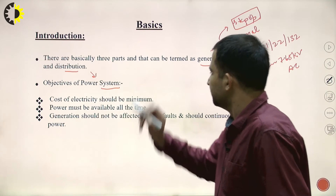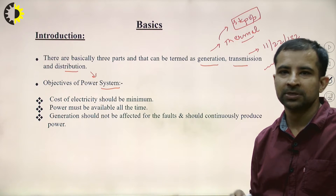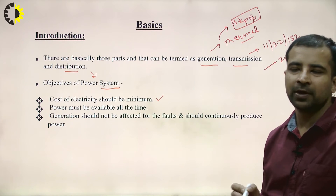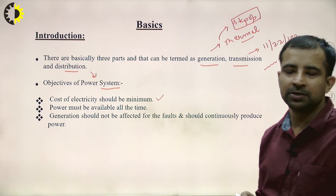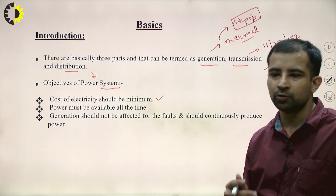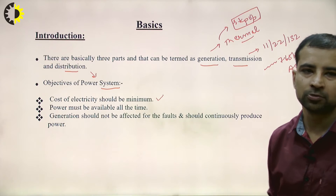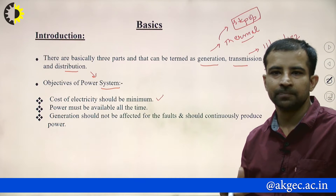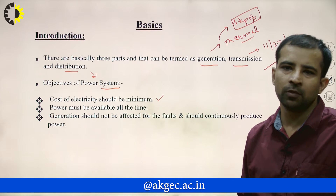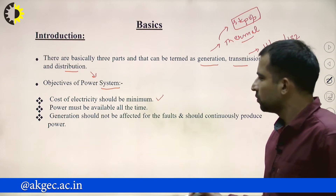The objectives of power systems: first, the cost of electricity should be minimum. Whatever electricity is generated, as a consumer you expect to pay the minimum possible amount. You don't want to pay a higher amount, so the cost of electricity must be kept minimum.